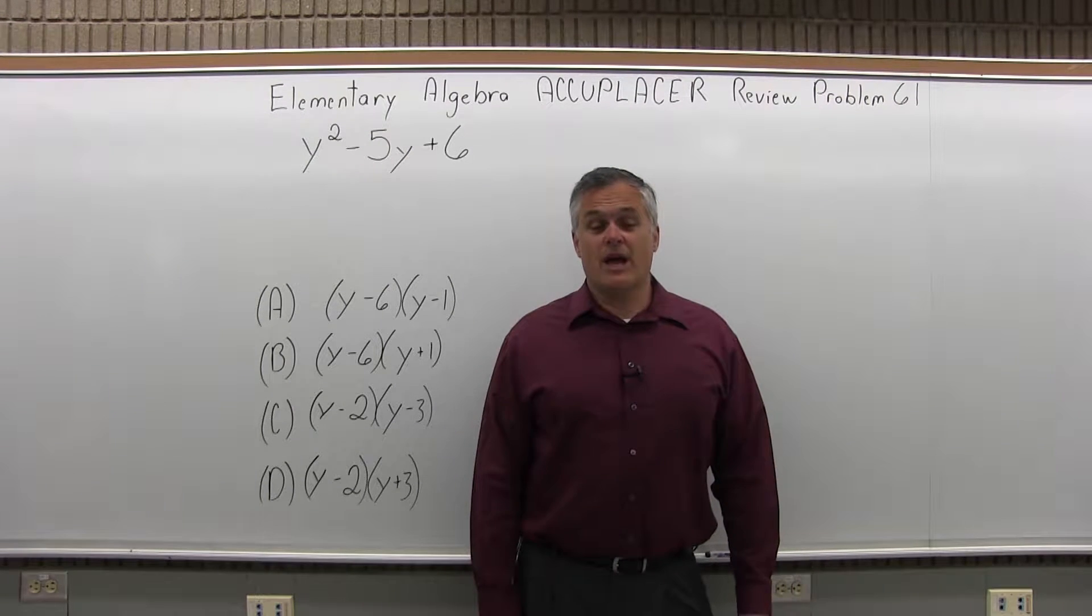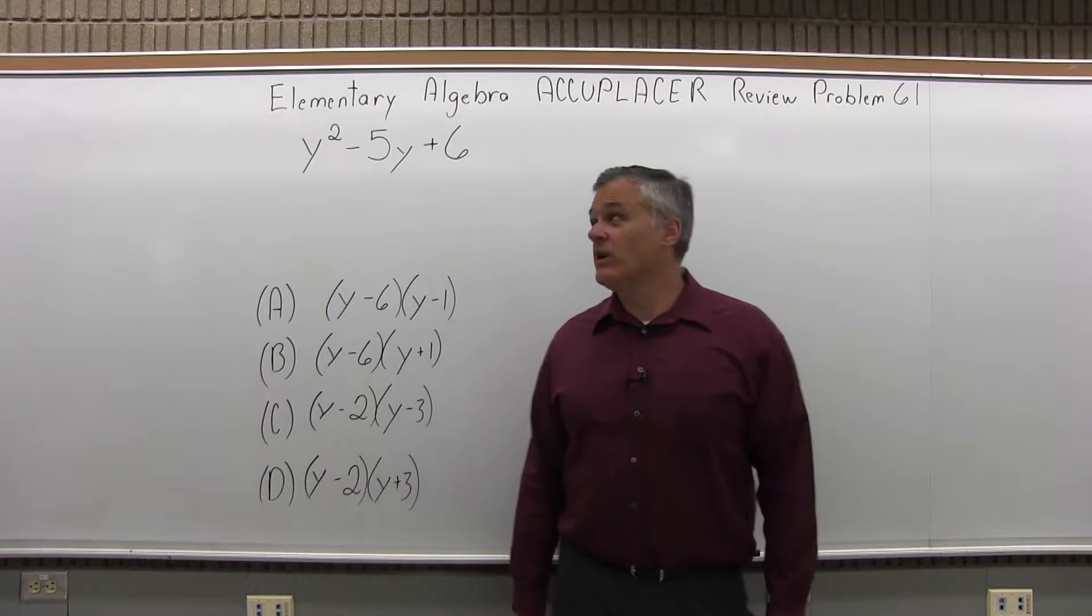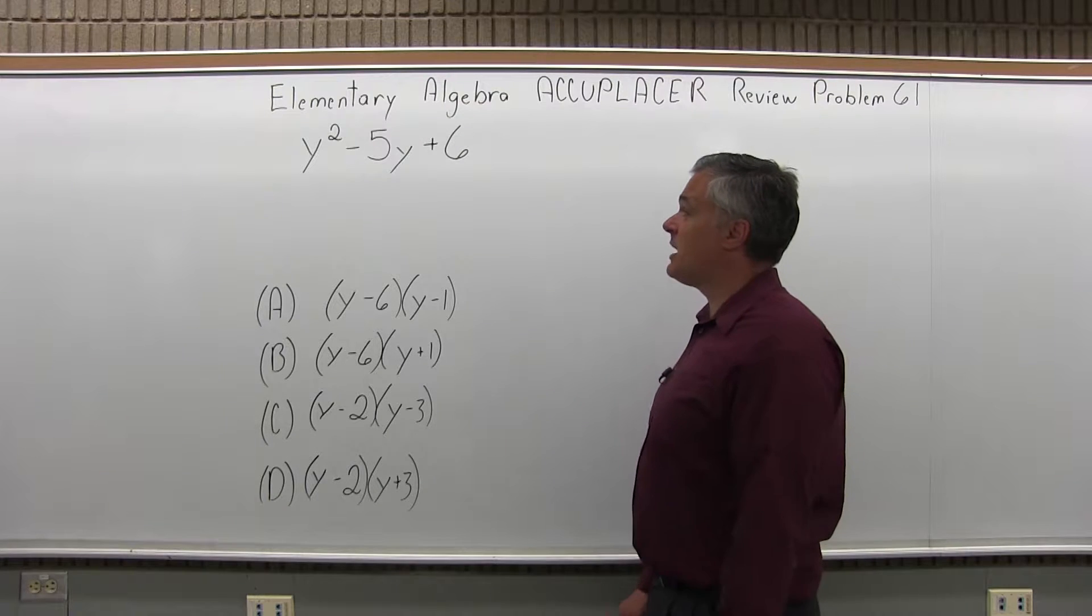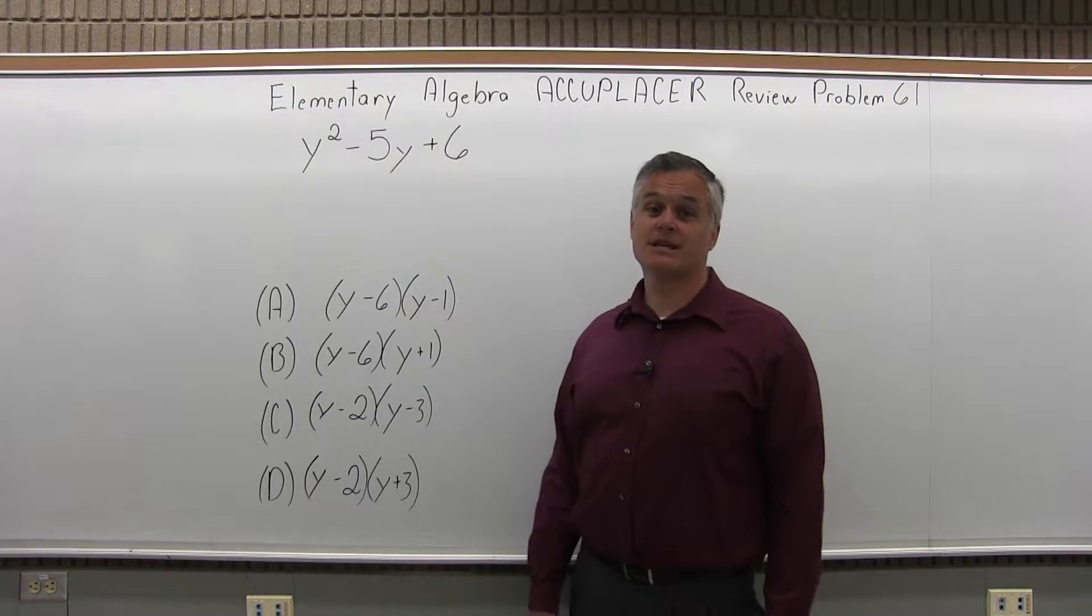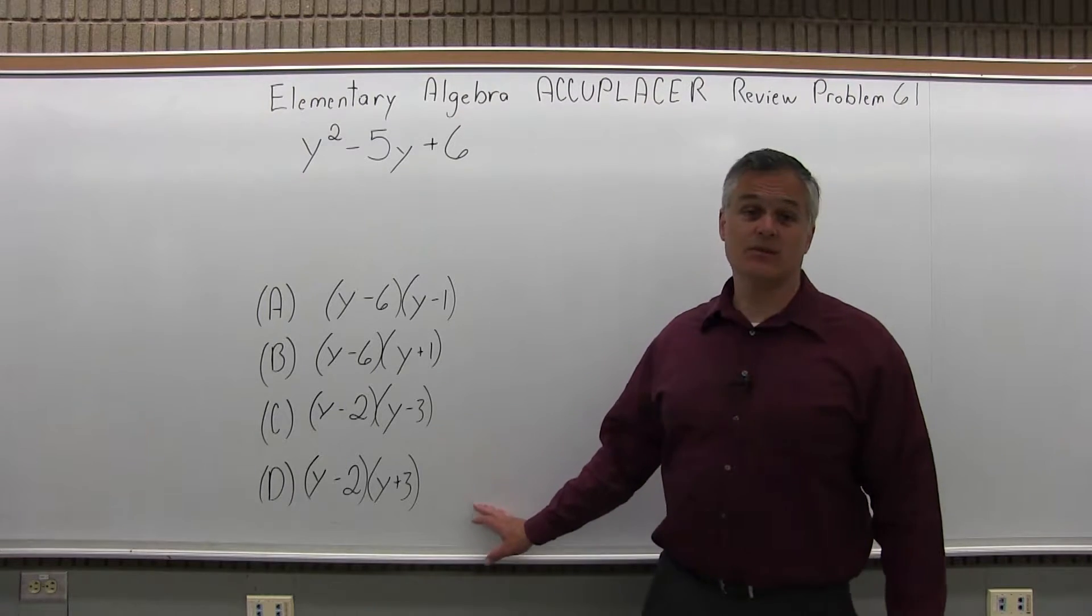This is the Elementary Algebra Accuplacer Review, Problem 61. We have y to the second power minus 5y plus 6, and we want to see which one of four options it's equal to.